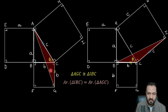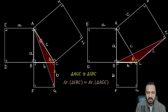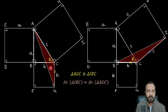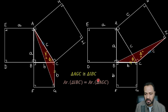Since triangles AGC and IBC are congruent, their areas are equal. Looking at triangle IBC: if this is the base and this is the vertex, the altitude between them is b, and the base is also b. So the area of this triangle is b²/2 (half times b times b). Therefore the area of triangle IBC is b²/2, and the area of triangle AGC is also b²/2.